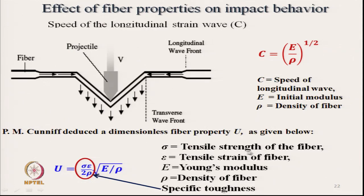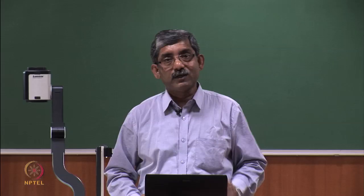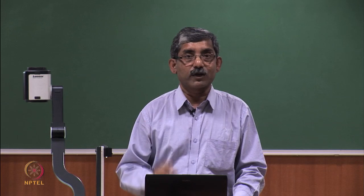Conniff deduced a dimensionless fibre property termed U, given by U = (σε / 2ρ) × C, where C = √(E/ρ). Here σ is tensile strength of the fibre, ε is tensile strain, E is Young's modulus, ρ is density, and σε/ρ is known as specific toughness of the fibre. U is effectively the product of specific toughness and C — the speed of the longitudinal wave. Higher U value means higher effectivity of a particular fibre for ballistic protective clothing.